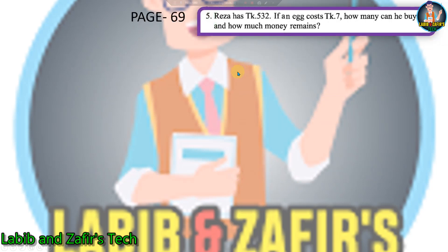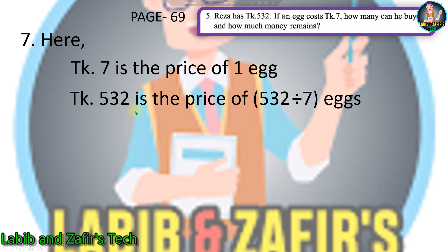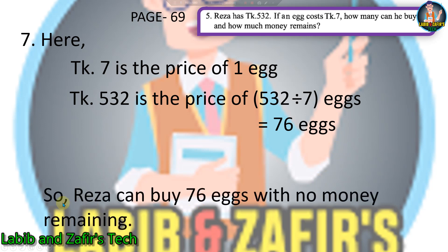Our seventh word problem is from page 69: Reza had taka 532 — if an egg costs taka 7, how many can he buy and how much money remains? Taka 7 is the price of one egg, so taka 532 is the price of 532 divided by 7 eggs, which equals 76 eggs. Since 7 multiplied by 76 equals 532, there is no remainder — Reza can buy 76 eggs with no money remaining.